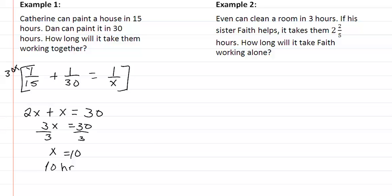In our second one, Evan can clean a room in three hours. If his sister Faith helps, it takes them two and two-fifths hours. So we start off with Evan's, which is one out of three, plus Faith, which we don't know. We will call her one out of x.